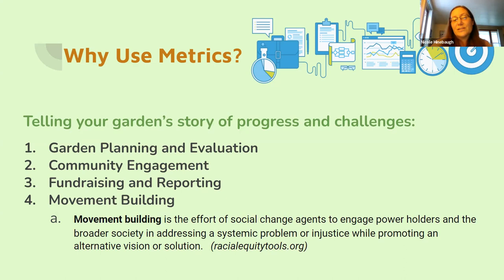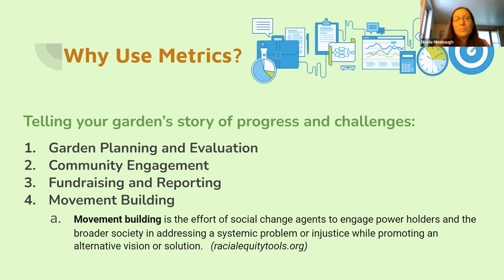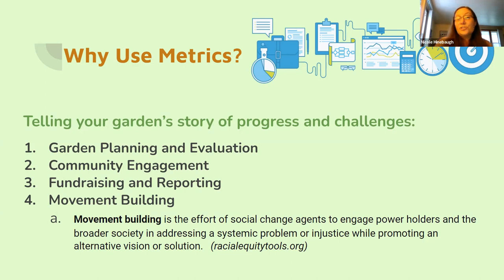Metrics are also really great for community engagement. As you're communicating out with your stakeholders by email, newsletter, signage, or any other way, being able to tell the story of how many people are engaged in your garden, how many pounds of produce are being distributed, how many varieties you're growing, and how that has changed over the years is useful. You can also tell the story of your challenges — for example, due to the pandemic, demand has increased, so you need more hands on deck to support labor.